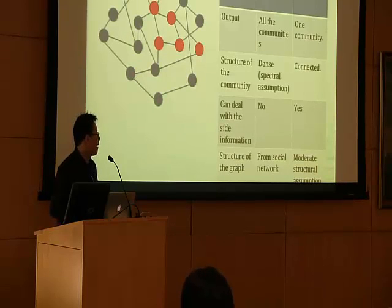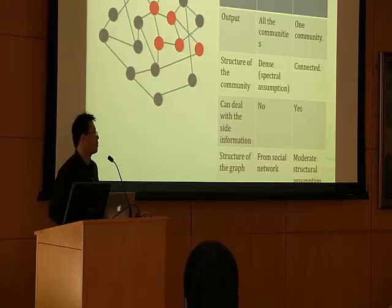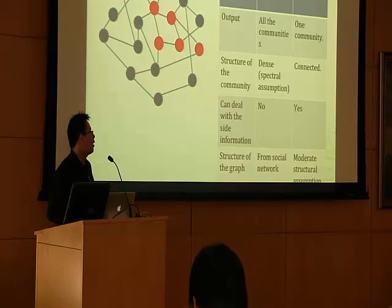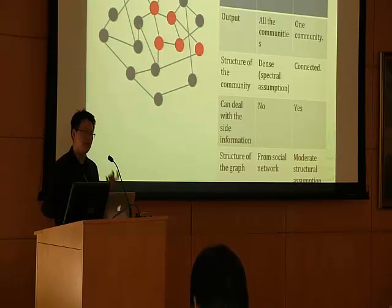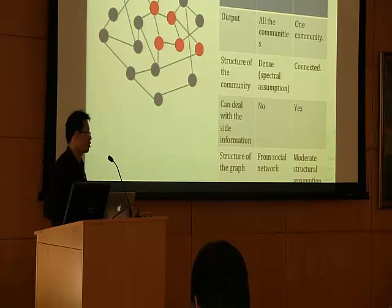Finally, it's about the structure of the graph. We need to make some slightly stronger assumptions. In most existing work, they just take whatever graph they see. Here we need to assume that the network exhibits some kind of stochastic structure.